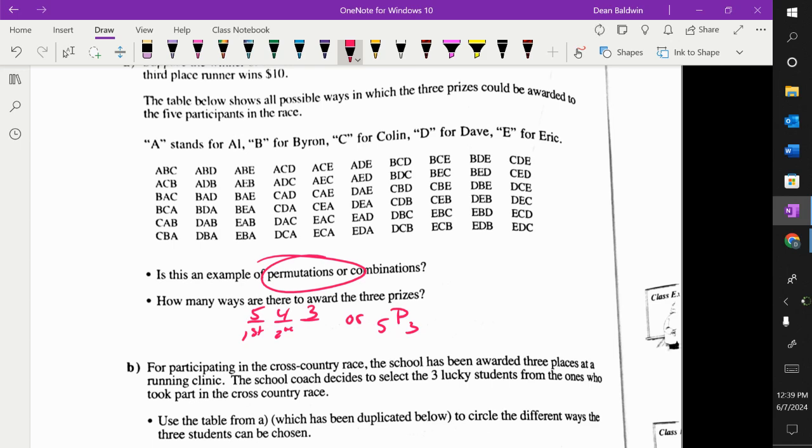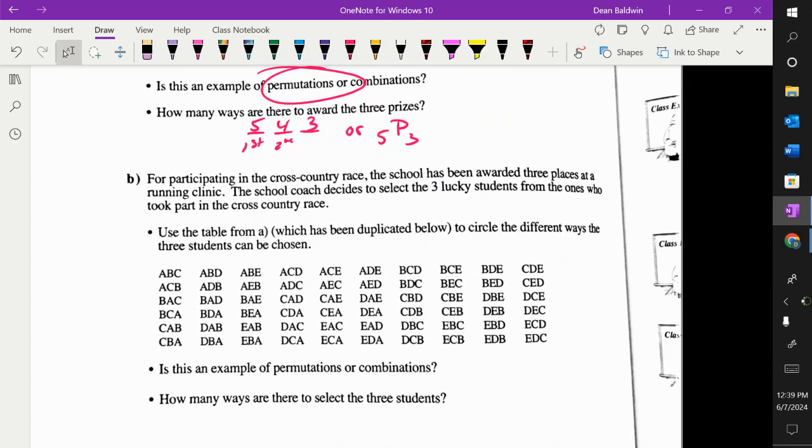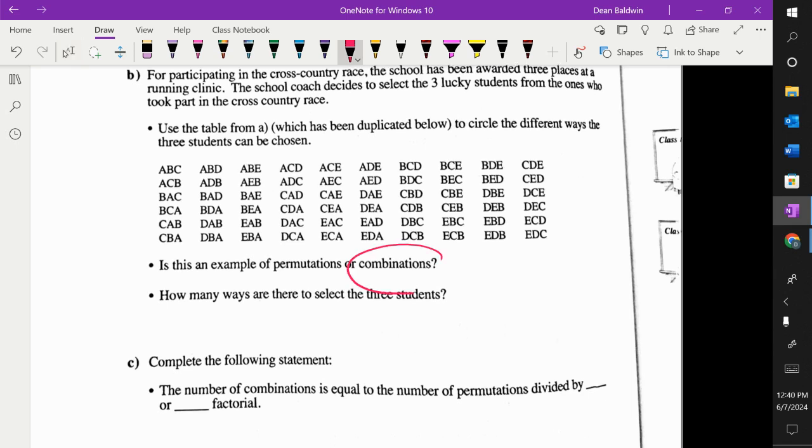But if instead of awarding prizes for first, second, third, we say, okay, the top three people go to provincials or nationals or whatever. Top three go. Does the order matter? No, you just need to be top three. It doesn't matter if you come first or third or second. As long as you're top three, you get picked. So that makes this a combination.